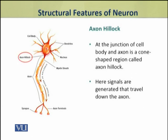We shall discuss another part of the neuron — that is the axon hillock. The axon hillock is present at the junction of the cell body and the axon. It is a conical shaped region. It is the place where action potentials and signals are generated, which then travel to the axon.